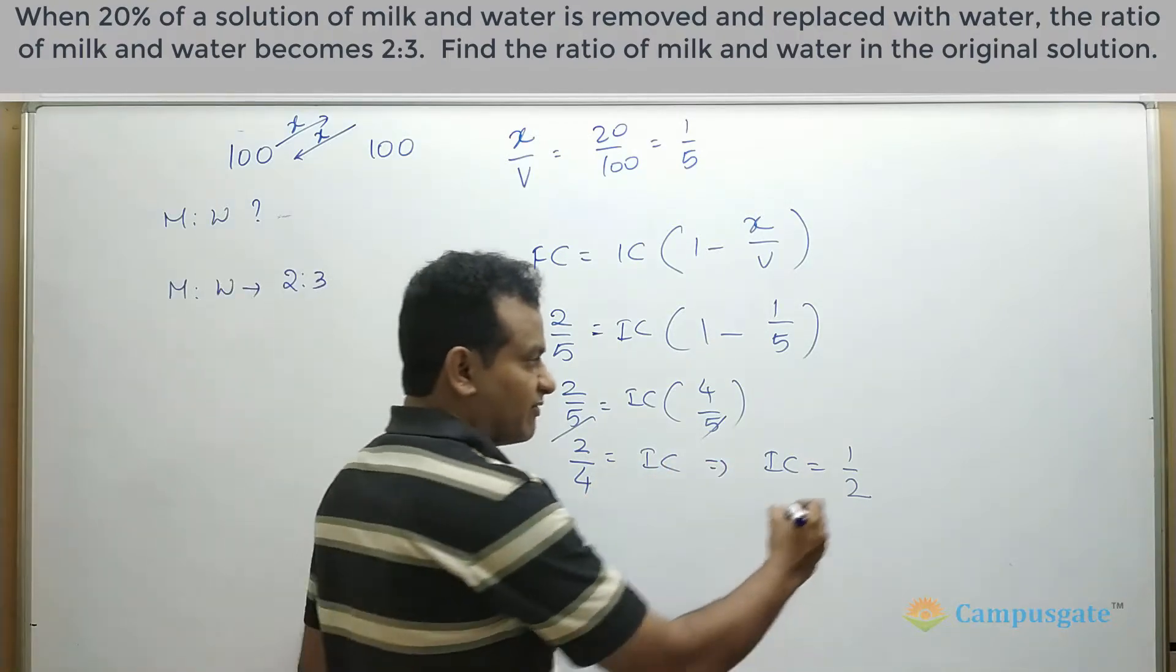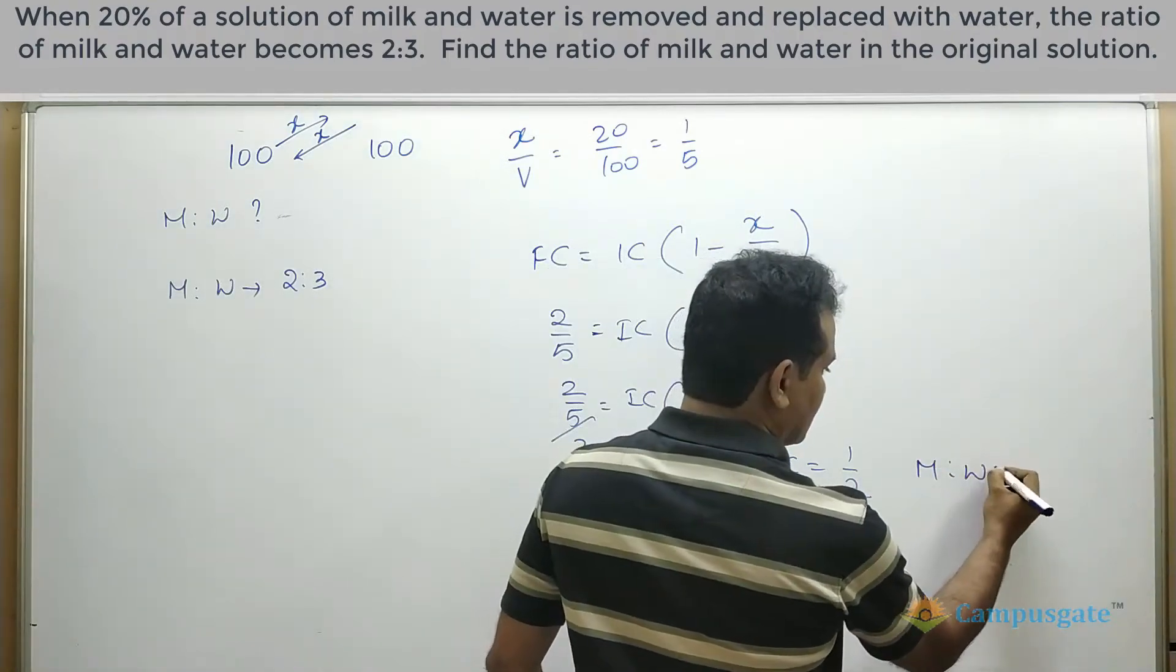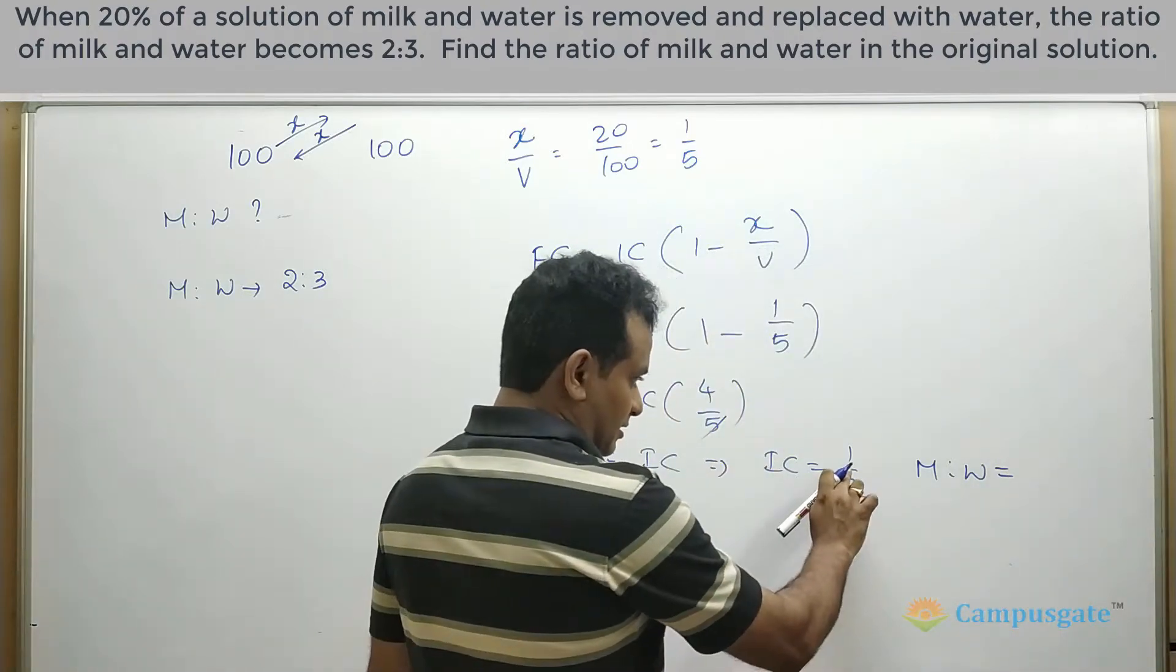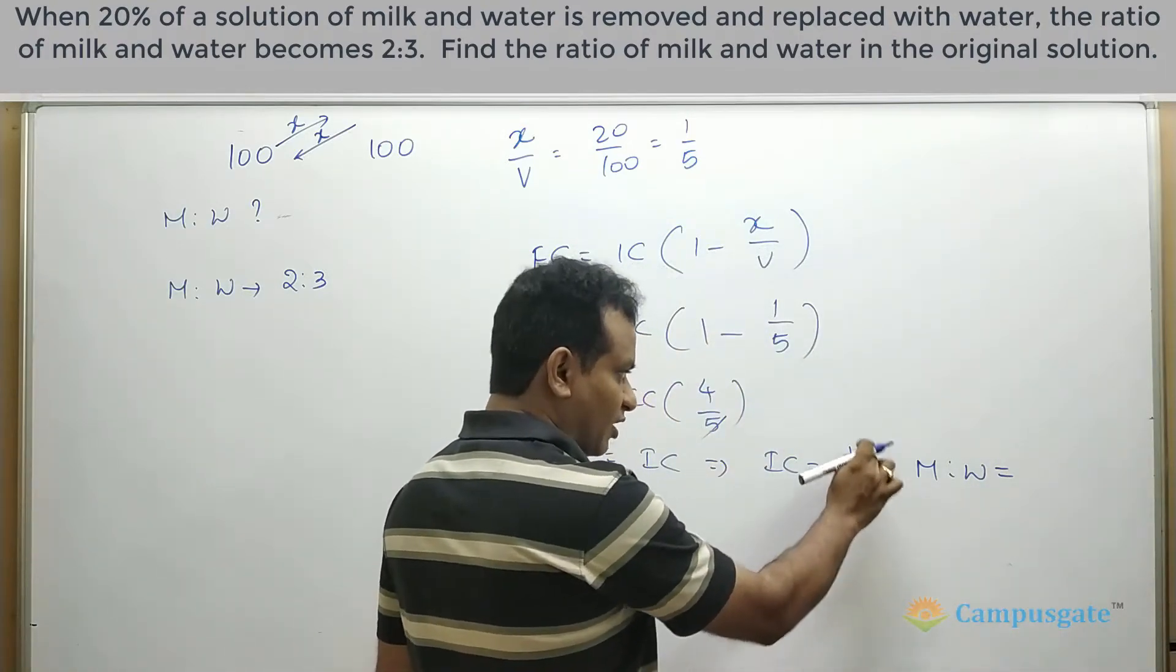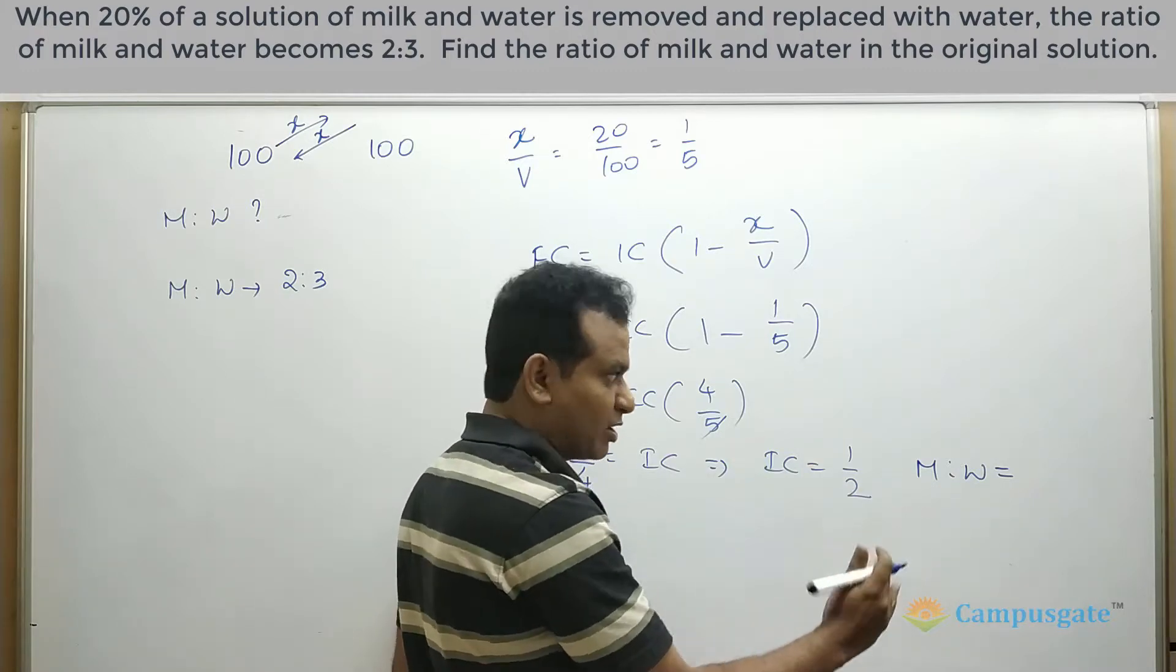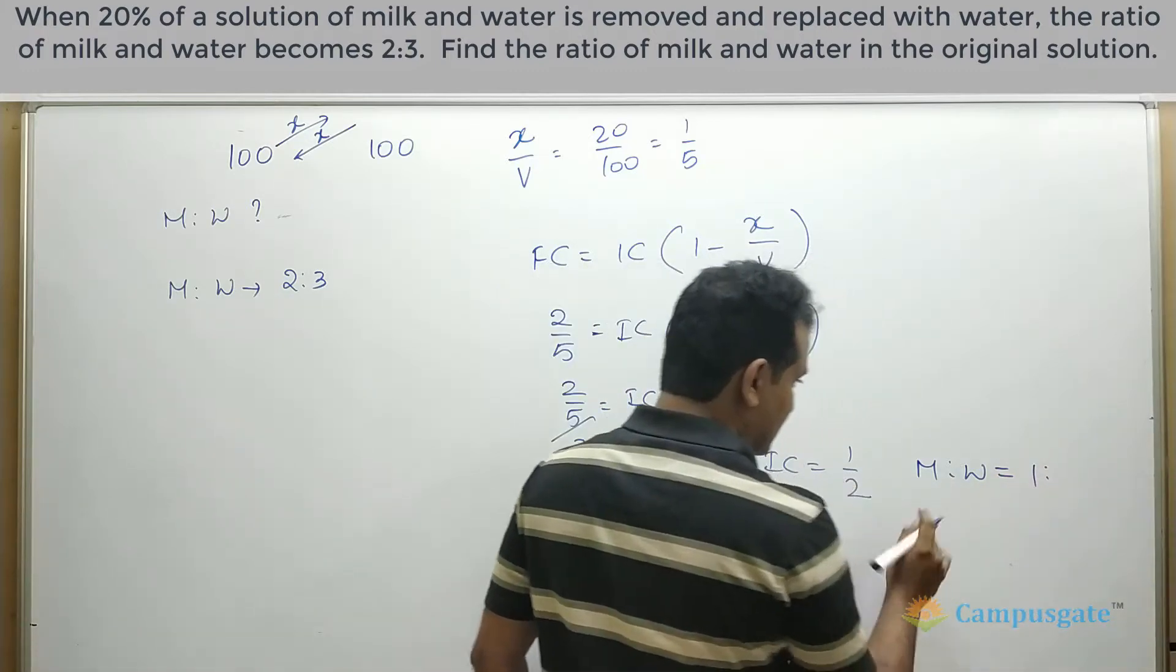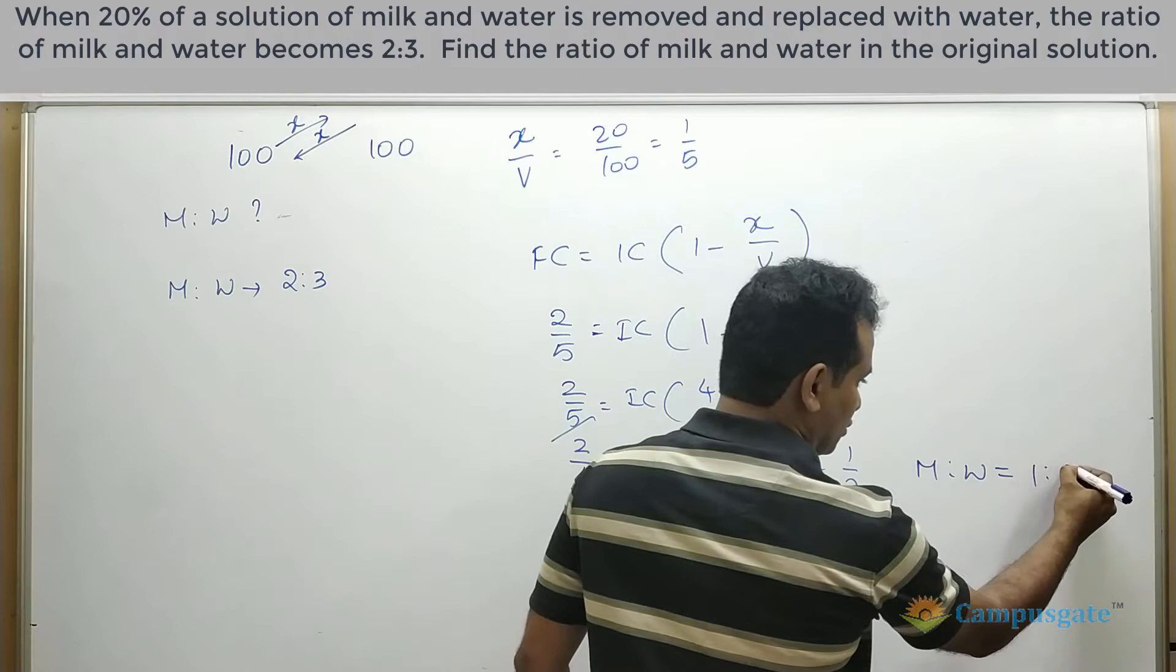Because we are asked to find milk and water ratio, out of 2 liters, 1 liter is milk. So the remaining part will be water. Therefore, milk and water will be 1 is 2, 2 minus 1 which is equal to 1.